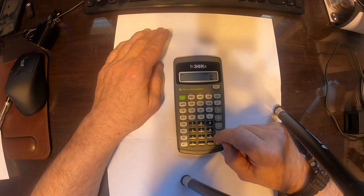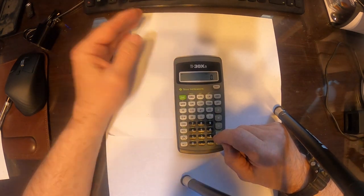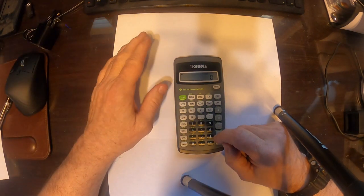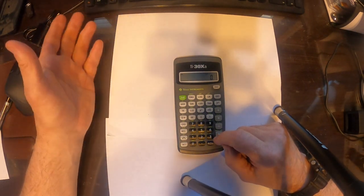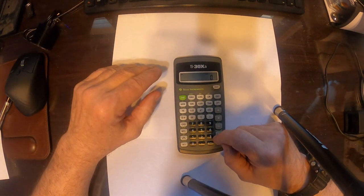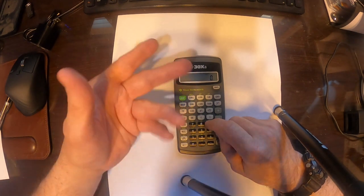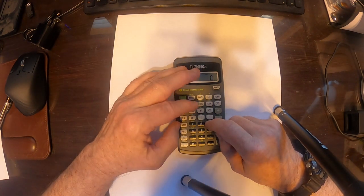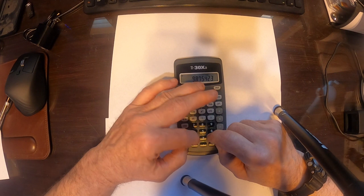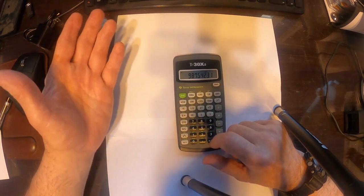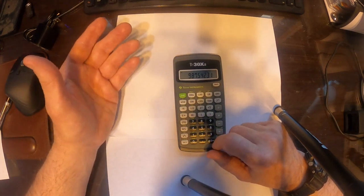All right, so another thing that this calculator does, it's really nice, is that it converts back and forth between floating point or decimal notation and scientific notation. So let's say we have, it's in decimal notation and floating point now, so let's say we have this number in there, and we want to put it into scientific notation.